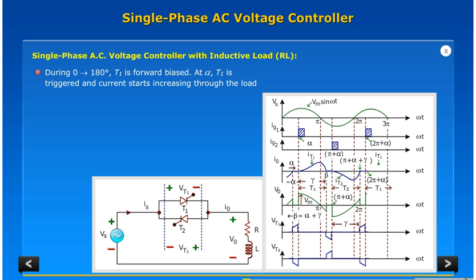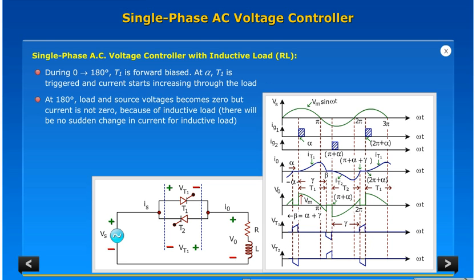During 0 to 180 degrees T1 is forward biased. At alpha T1 is triggered and current starts increasing through the load. At 180 degrees load and source voltages become zero but current is not zero. Because of inductive load there will be no sudden change in current.